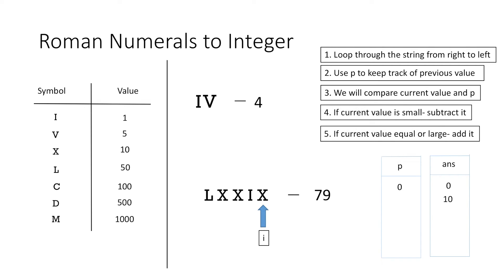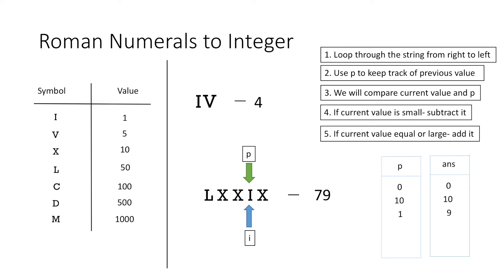So p now has the value of X which is 10. Then we move on to the next symbol I, which has the value 1. Comparing it with p which is 10, the value of I is smaller, so we subtract it from the answer and our answer becomes 9. We assign the value of the current symbol to p which is 1, and move on to the next symbol X, which has the value 10 and is greater than p which is 1, so we add it to our answer, making the answer 19.